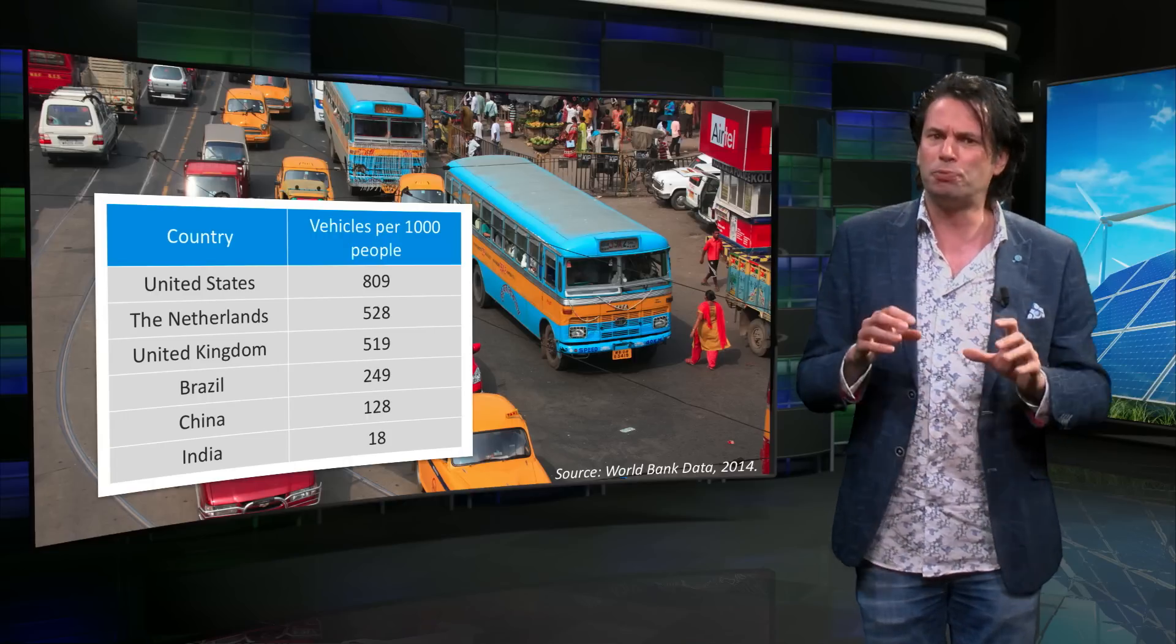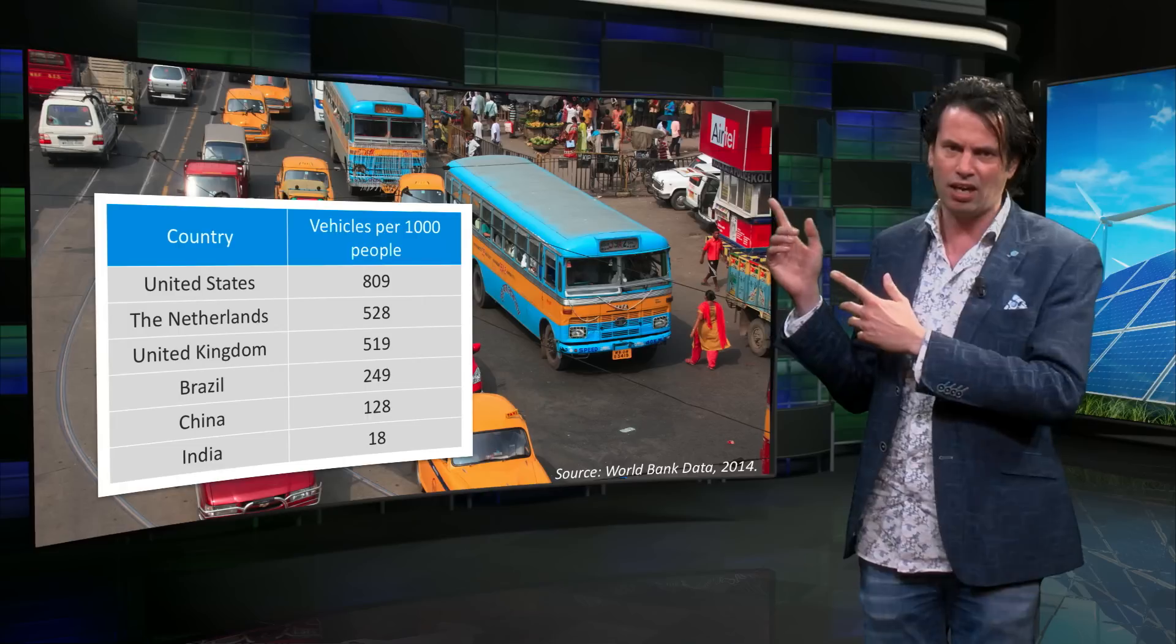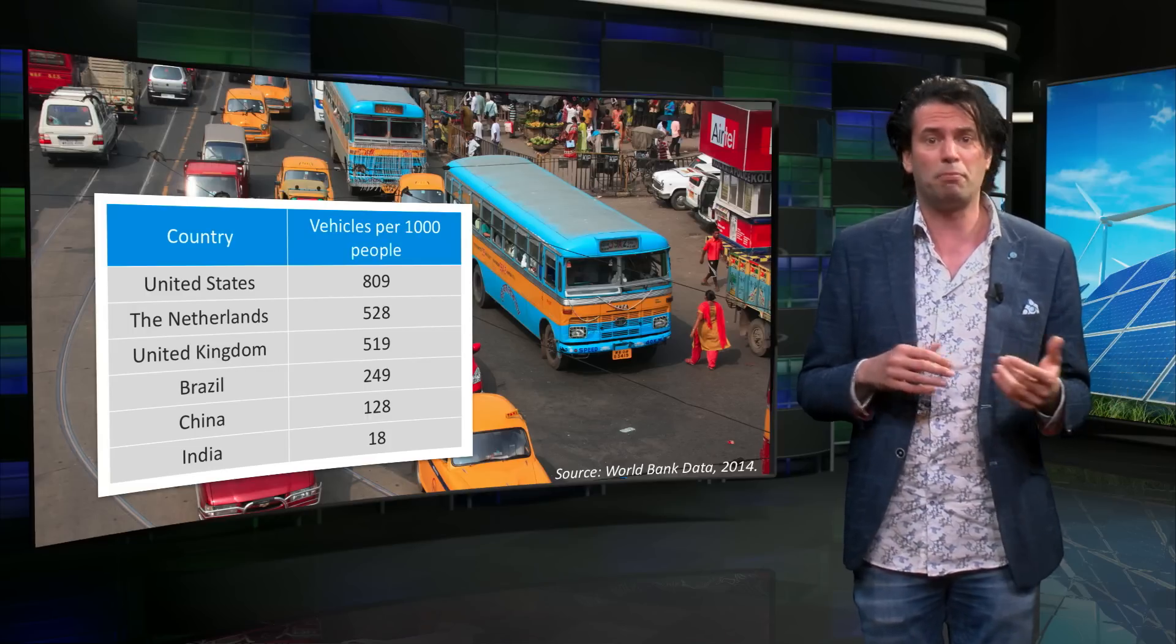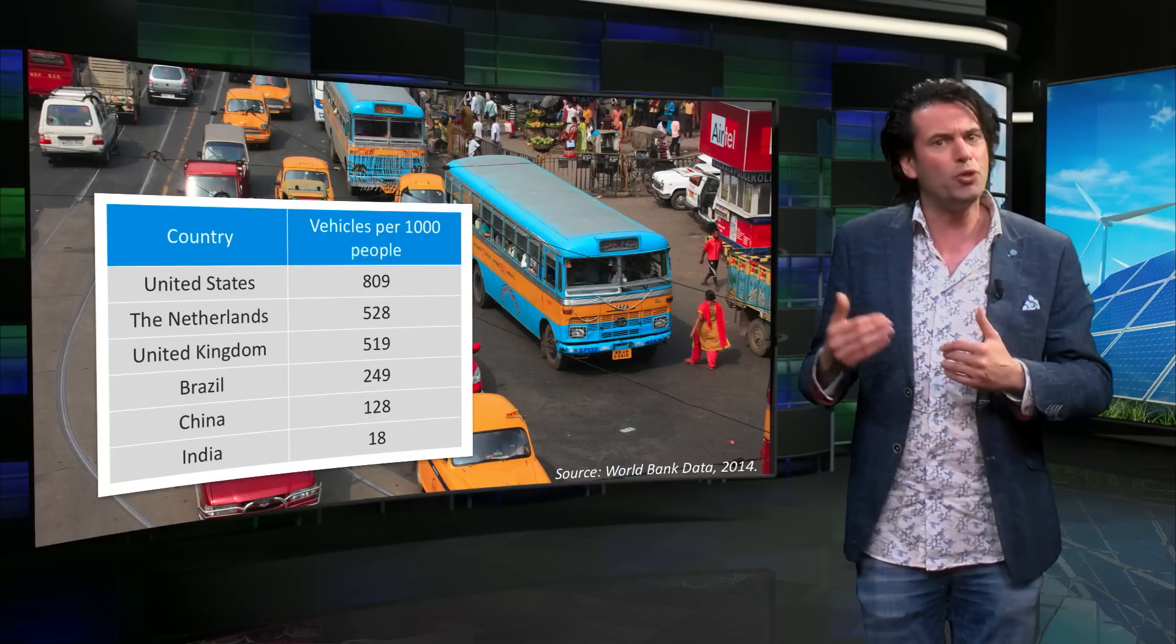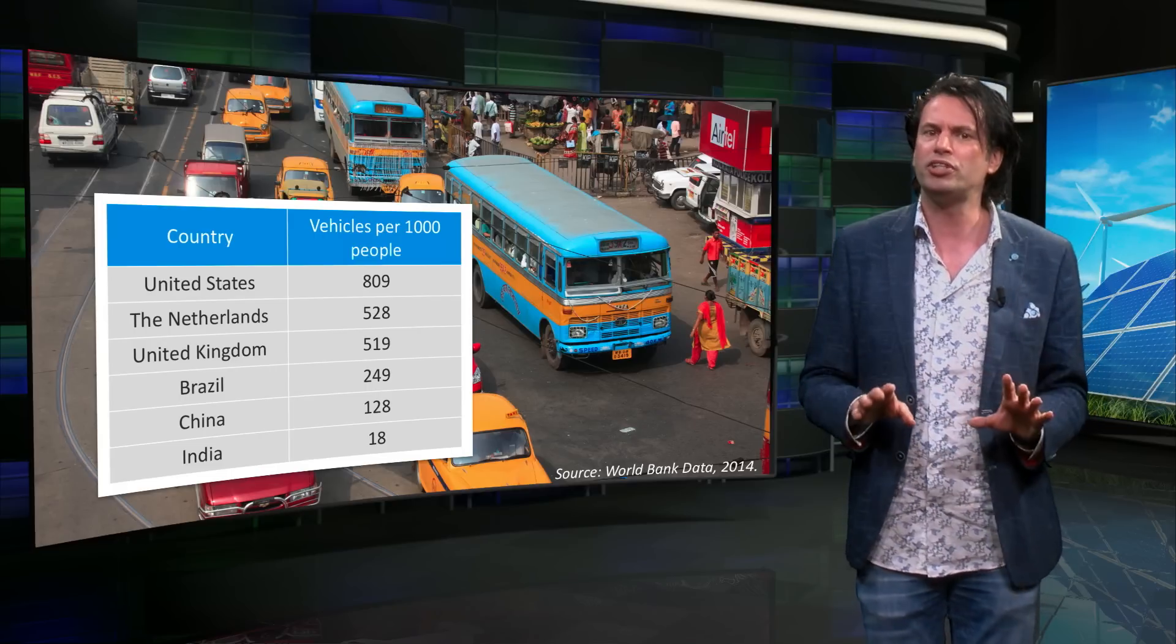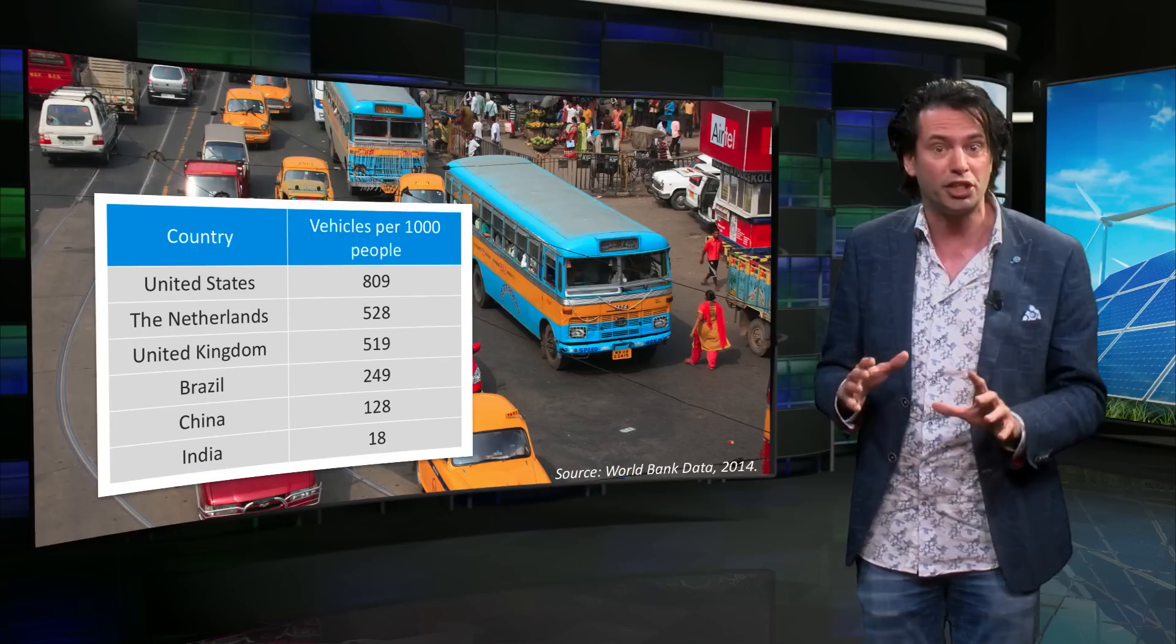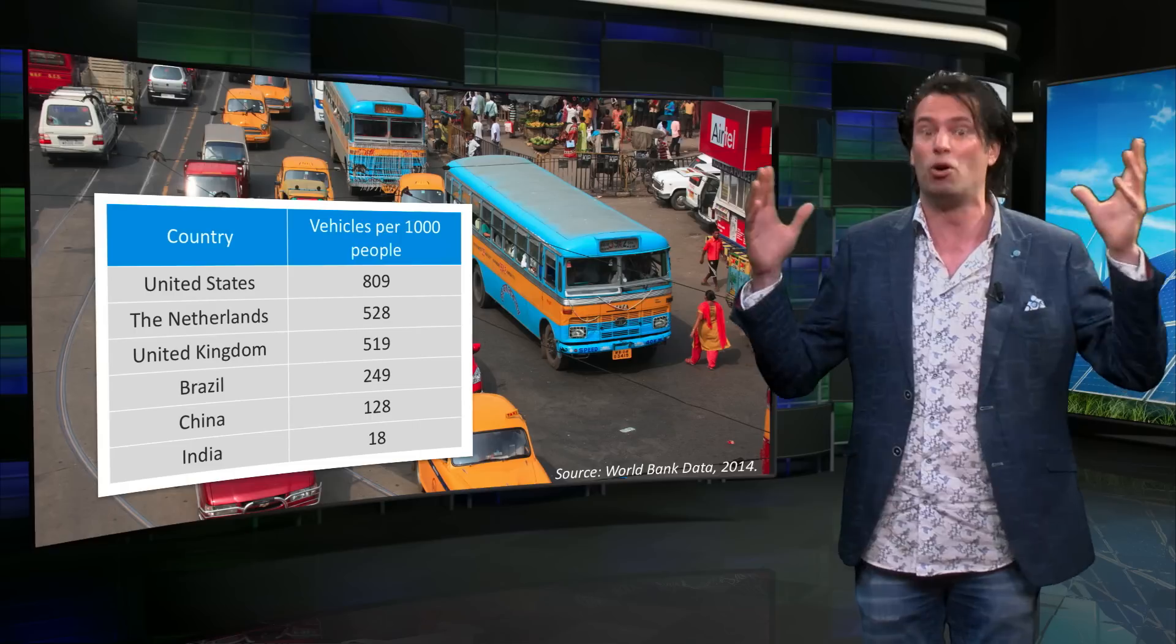If we take a look at the distribution of passenger car use around the world, we see a large difference. This table shows the number of vehicles per thousand people. Countries such as India, China and Brazil have significantly smaller vehicular use compared to the US, the Netherlands or the UK. It should be noted that the population of India, China and Brazil is much larger and an increase in the number of vehicles used to even half of those used in the US or the UK would increase the energy spent on transportation enormously.